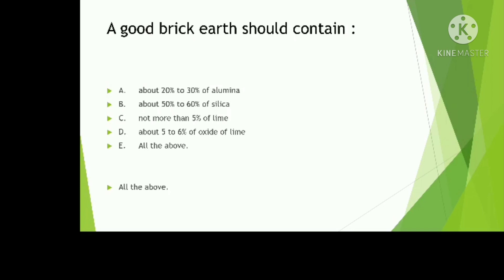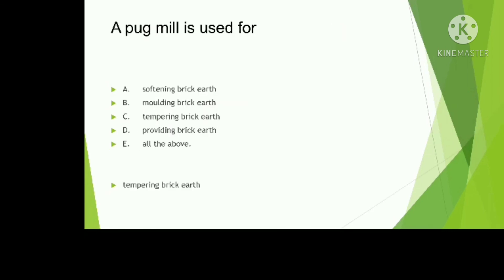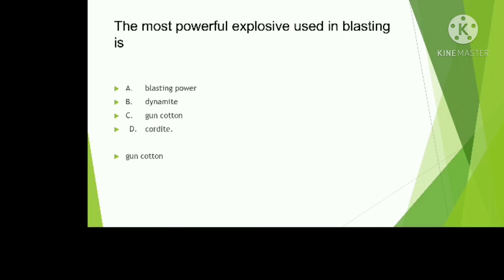A pug mill is used for softening brick earth, molding brick earth, tempering brick earth, or preparing brick earth — all of the above? The right answer is tempering of brick earth. The most powerful explosive used in blasting is blasting powder, dynamite, gun cotton, or cordite? The correct answer is gun cotton. Thank you.